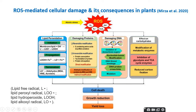This high level of ROS is harmful to cells because it damages major macromolecules such as lipids, proteins, DNA, and carbohydrates. For instance, lipid peroxidation is one consequence — ROS react with membrane lipids and ultimately produce malondialdehyde, acrolein, and other small molecules. Proteins may also be damaged through direct or indirect modifications, which can be reversible or irreversible; irreversible modifications are particularly harmful because they cannot be reversed.